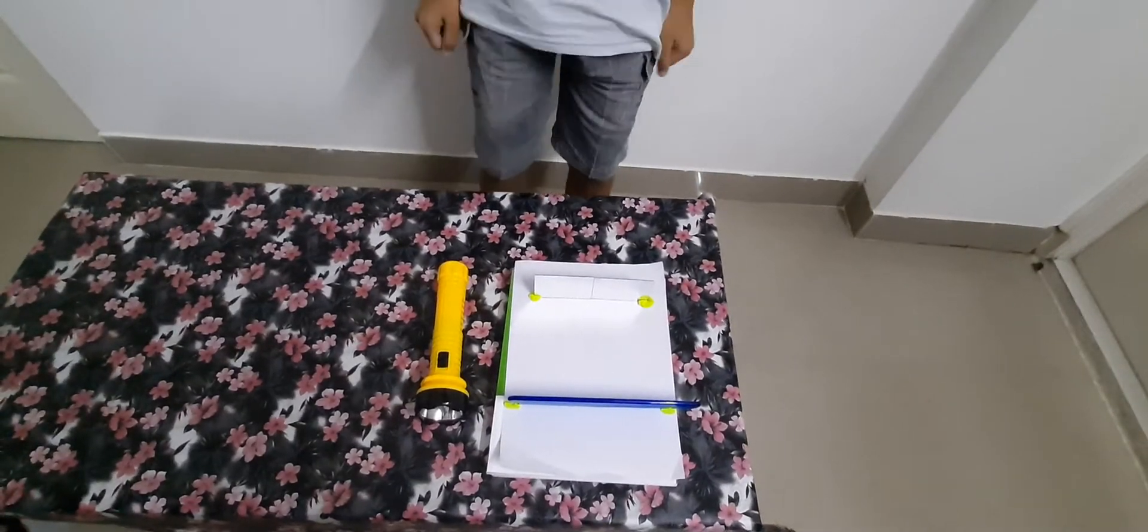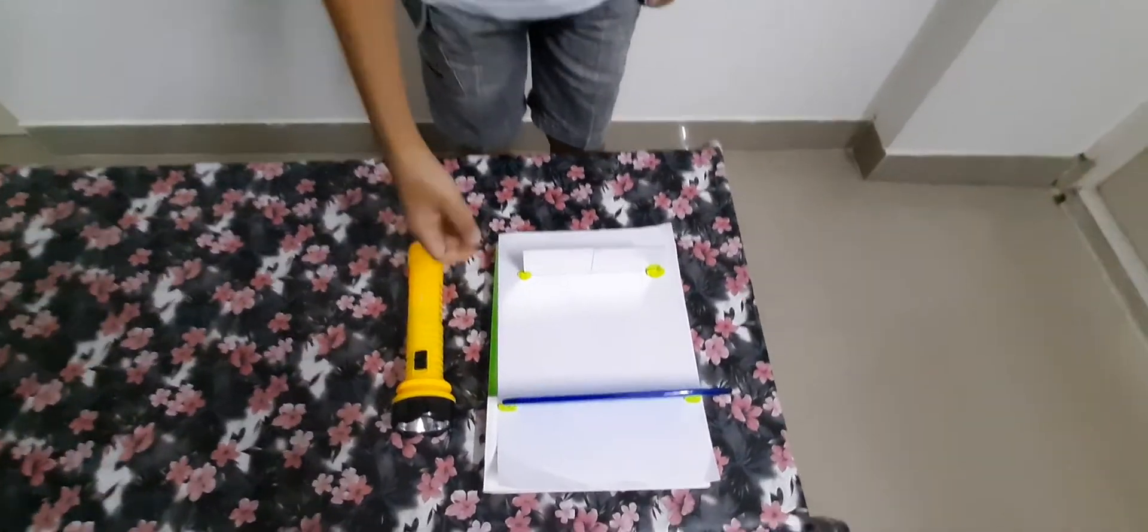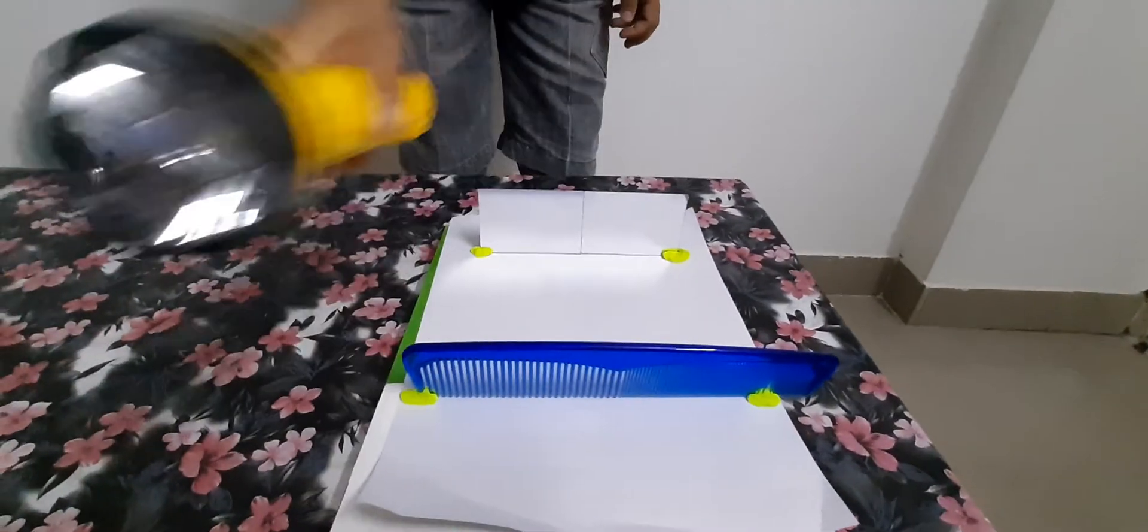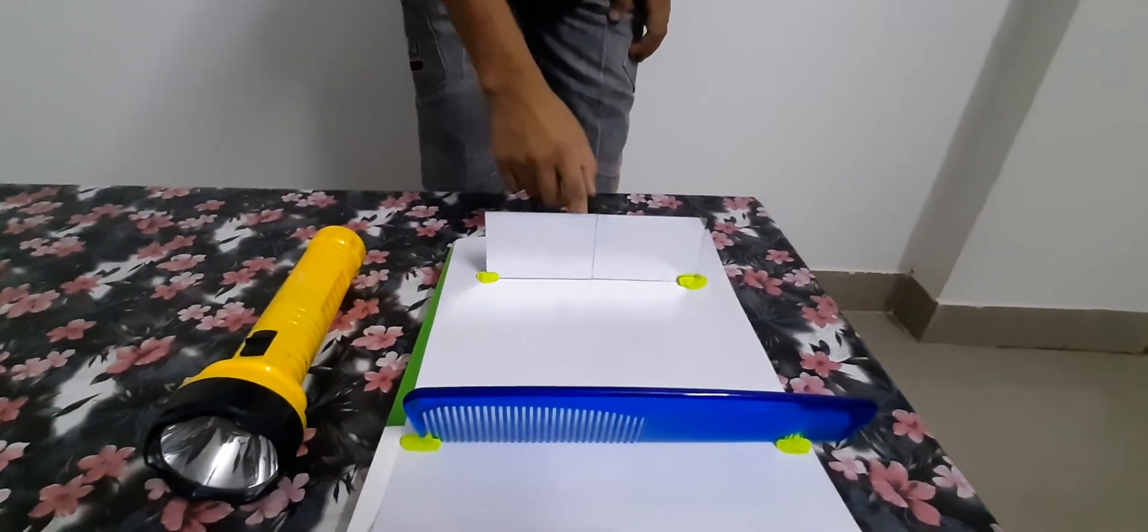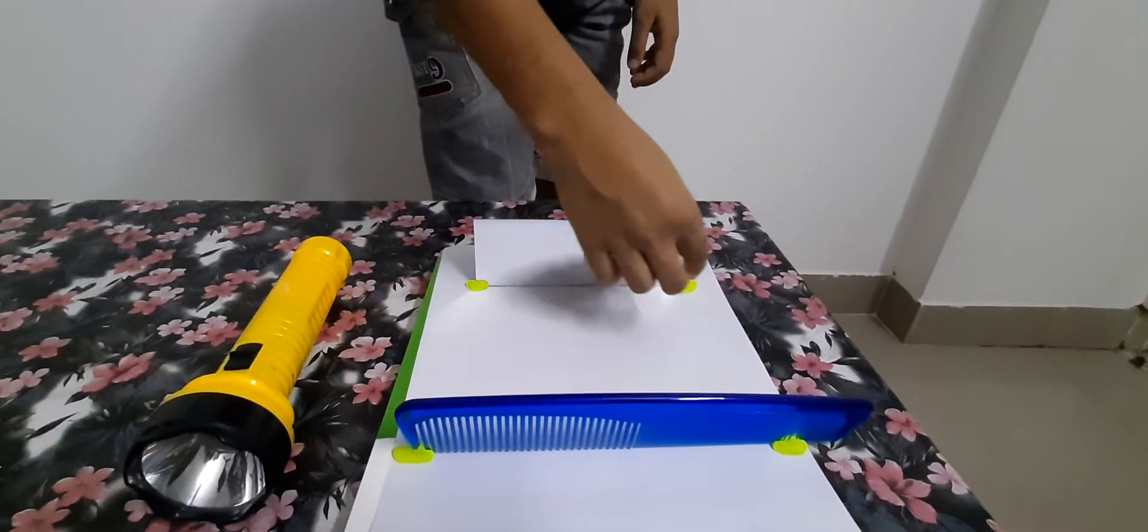Dark condition is needed for this experiment. I have used a plain paper, a comb, a torch, a plain mirror, and I have even used clay to hold these substances. Now I have switched off the light for performing this experiment.